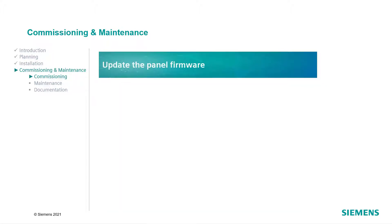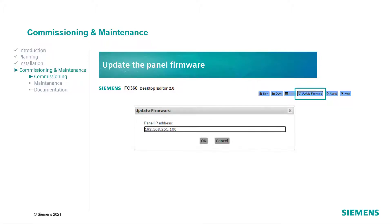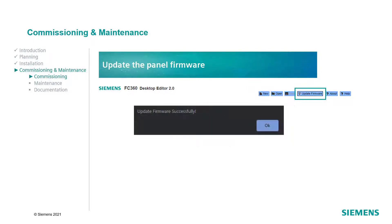The panel firmware should be kept up to date. To initiate the update, make sure to have the latest version of the FC360 Desktop Editor installed. Verify that the firewall rules are set correctly and connect the panel to the PC. Open the Desktop Editor and click on the Update Firmware button. Then set the panel to Access Level 3 and confirm the pop-up message. The firmware will now be updated, and a message will be displayed to indicate if the update has been completed successfully.